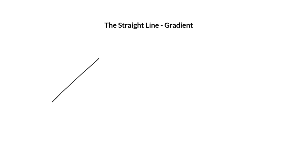The gradient in simple terms is just how steep a line is. Working left to right, if we have a line that's moving left to right in an upward direction, we know that that's a positive gradient. Likewise, if we have a line that's going left to right and it's going downward, then that is a negative gradient.